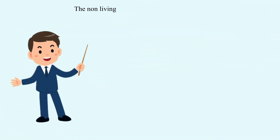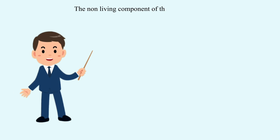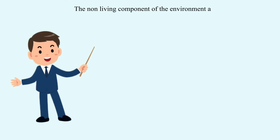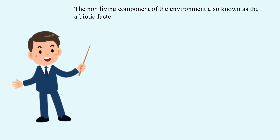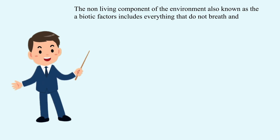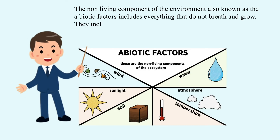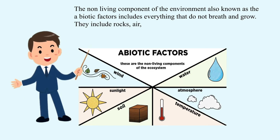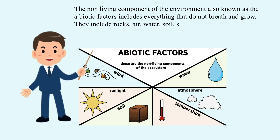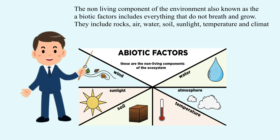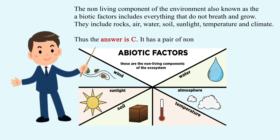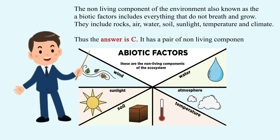The non-living components of the environment, also known as the abiotic factors, include everything that does not breathe and grow. They include rocks, air, water, soil, sunlight, temperature, and climate. Thus, the answer is C — it has a pair of non-living components.